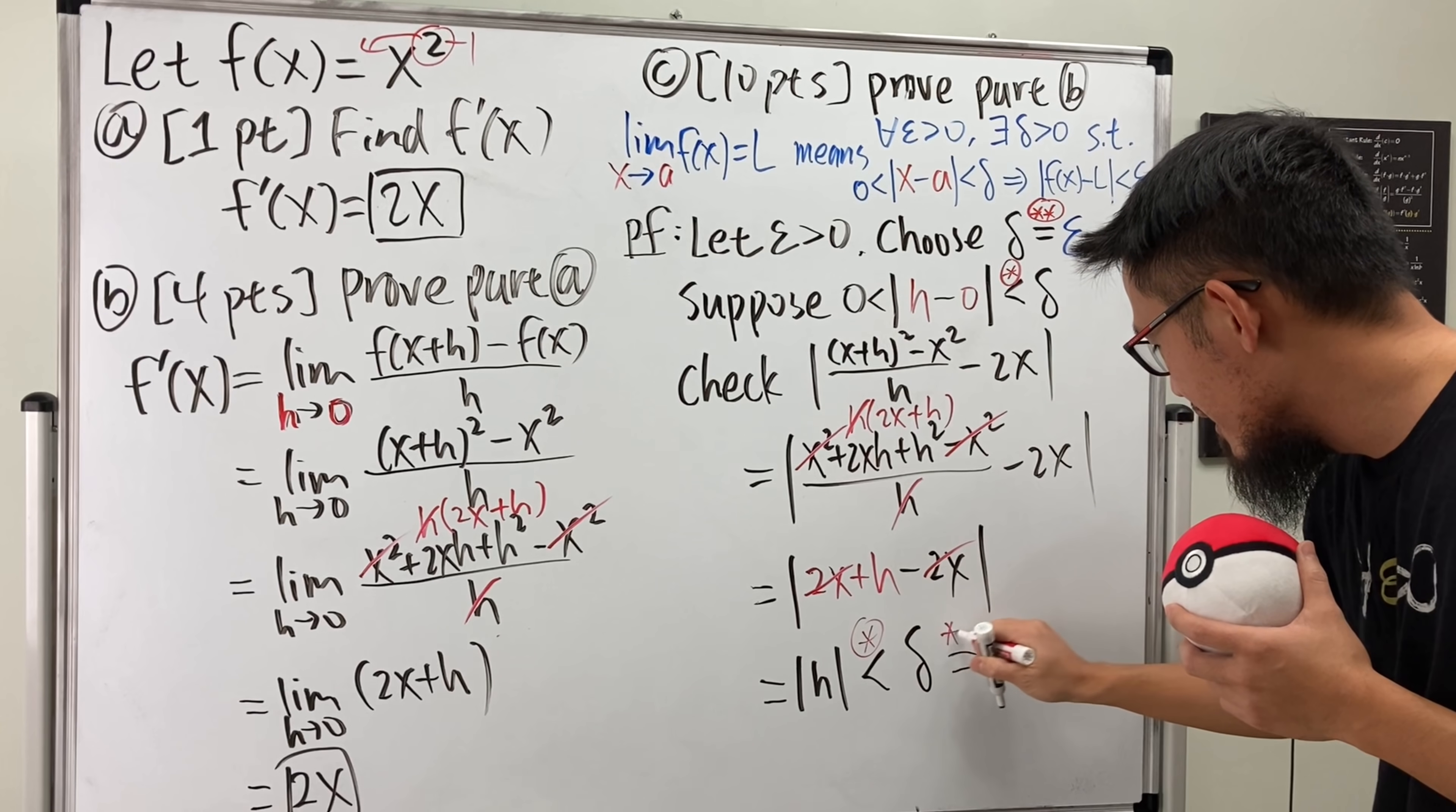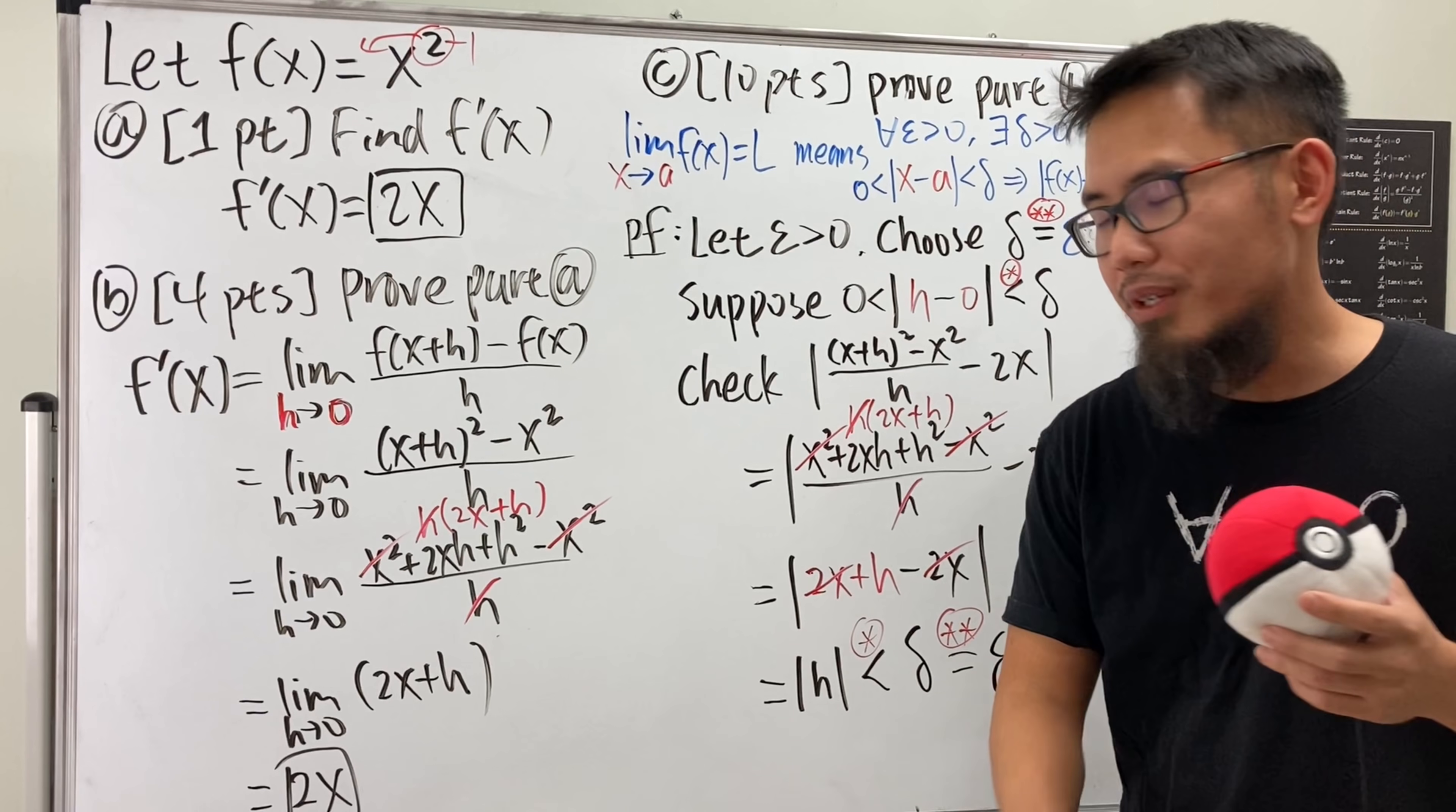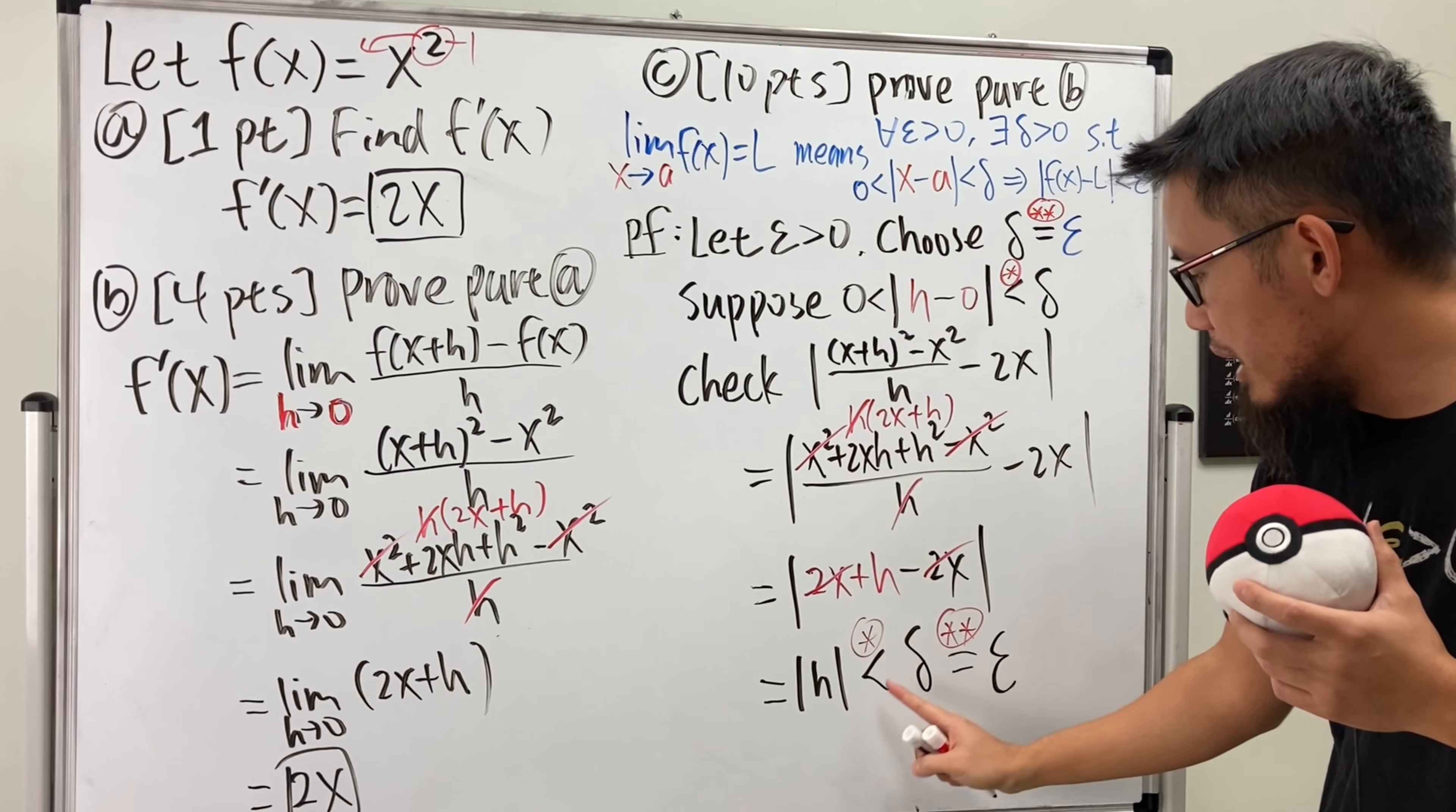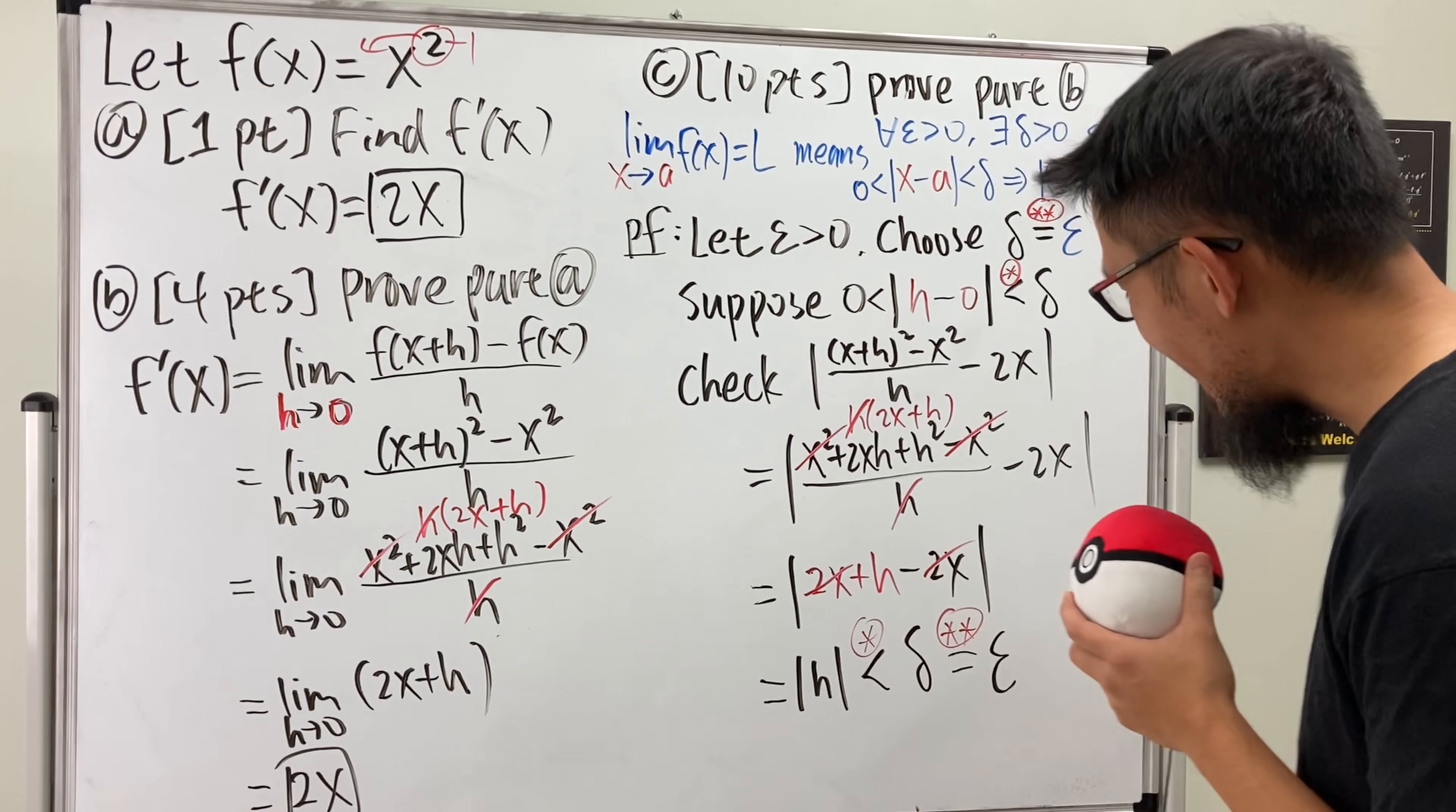So have a look. We have shown that if this inequality is true, then this part will be less than epsilon. And that's exactly what we need right here. And that means we are done. So, of course, put a box and shade the box in. Well, if you prefer, you can also put down a QED, but of course, I like the box.